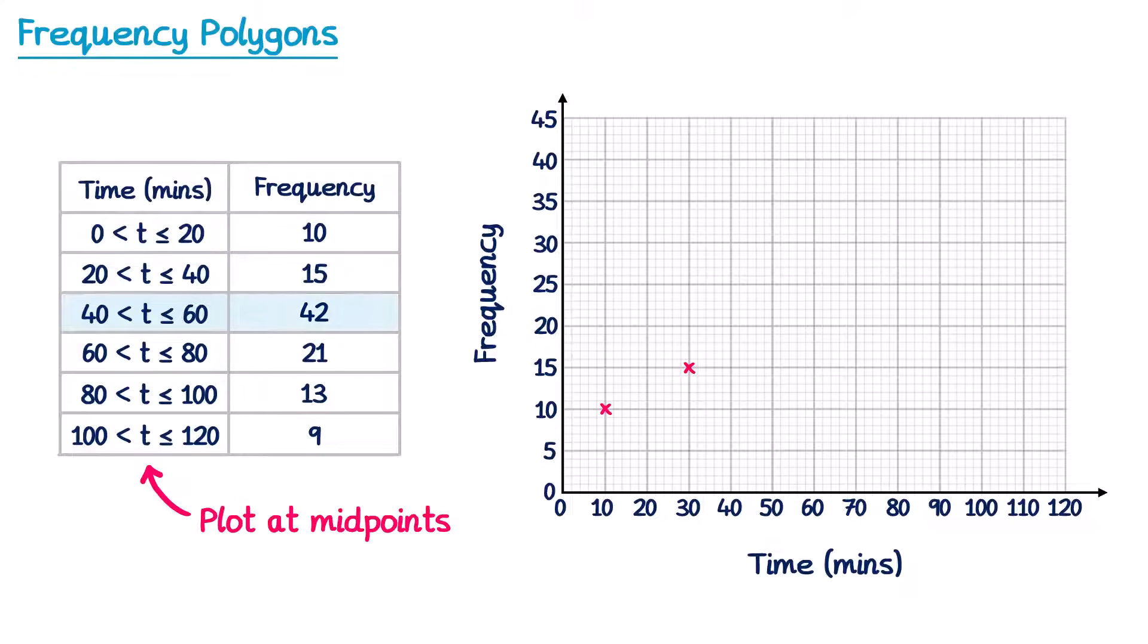Then for the next one, from 40 to 60, the midpoint is 50, so we find 50, and the frequency is 42, all the way up here. So we plot across at 50, 42.